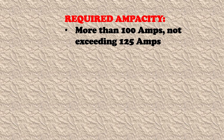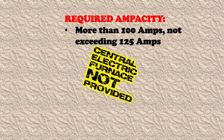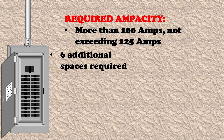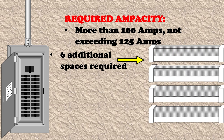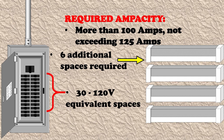Our next example has the same required ampacity range — more than 100 amps but not exceeding 125 amps inclusive — but in this case a central electric furnace is not provided. Because a central electric furnace is not provided, we are now required to have six additional spaces, since we no longer have that two-pole breaker supplying a central electric furnace. This could be something like baseboard heaters individually in each room, requiring a bit of extra panel space. In this case, we are required to have 30 of those 120-volt equivalent spaces.